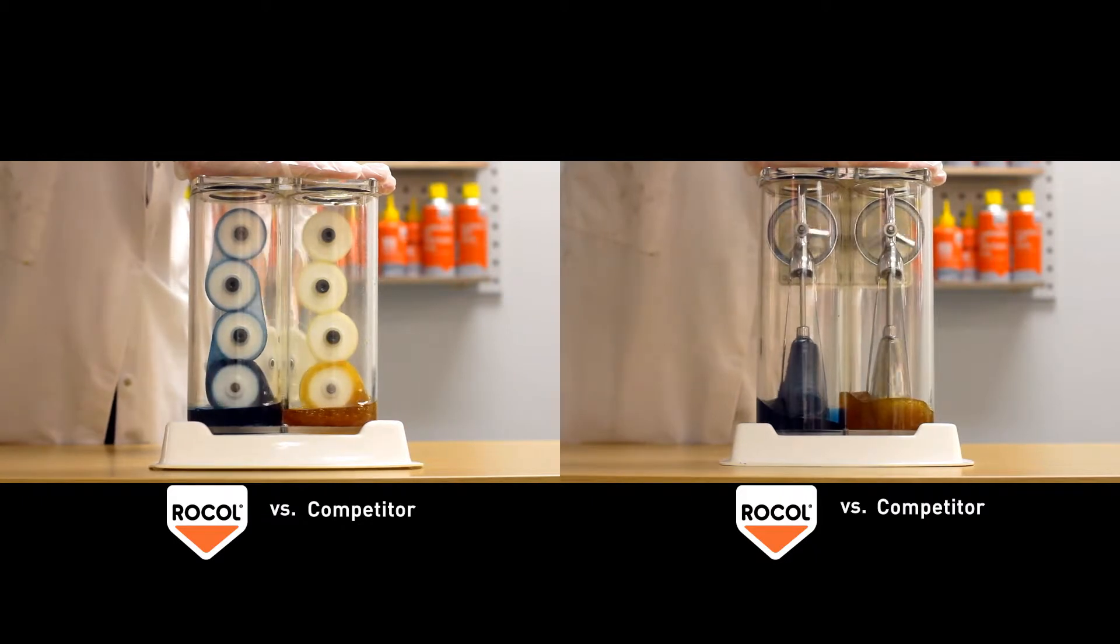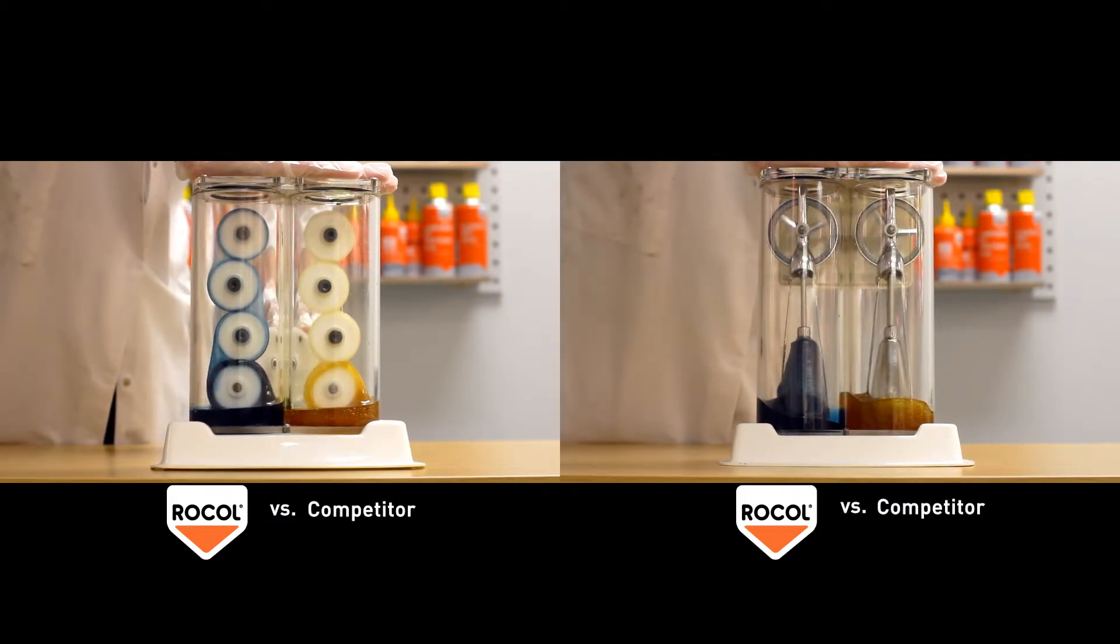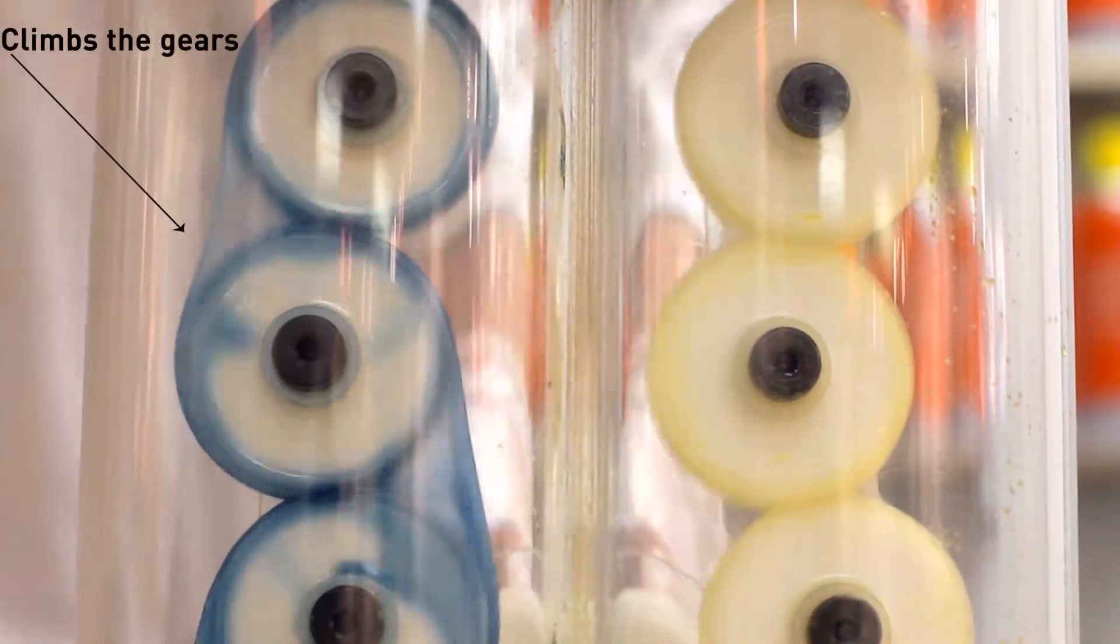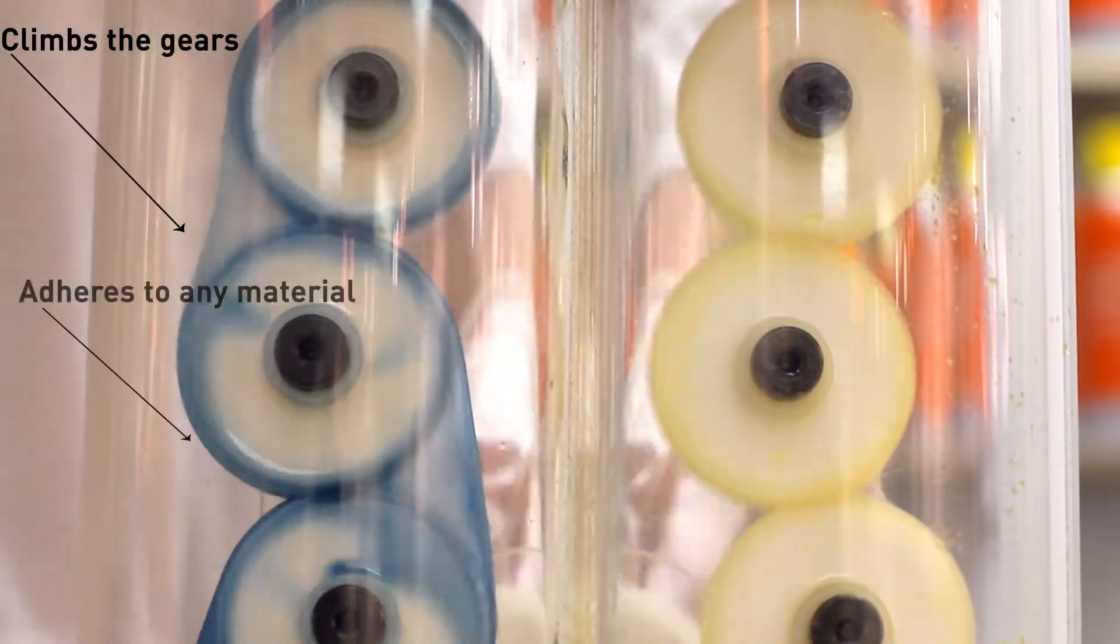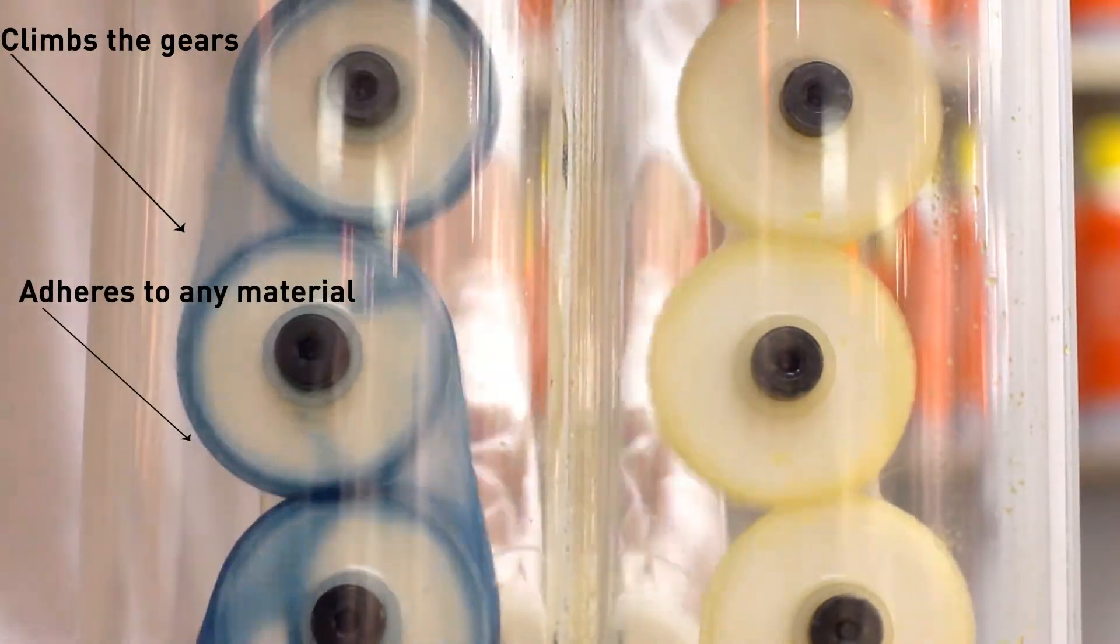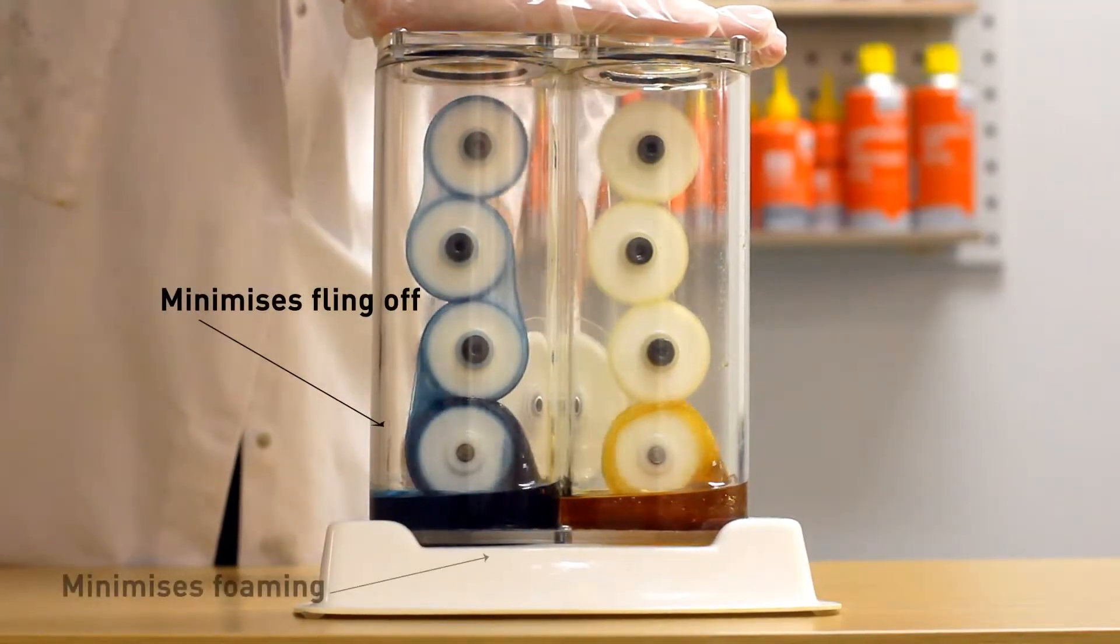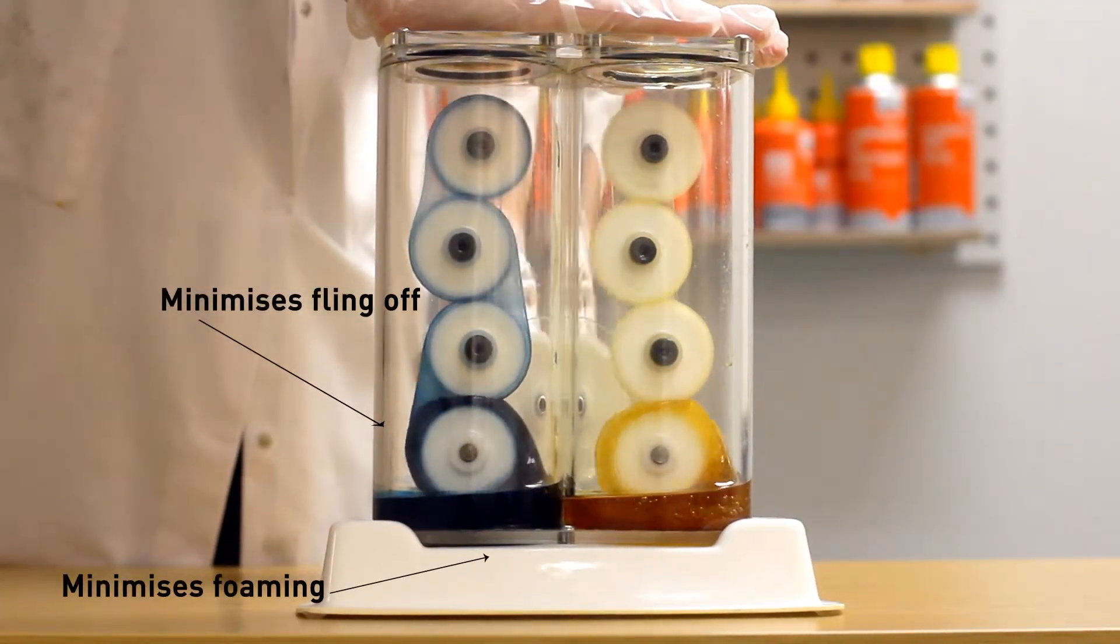Observe in both cases how the Roco Gear Oil with the Startup Protection System lubricates from startup, climbs the gears, adheres to any material, minimizes fling off, and minimizes foaming. Both oils shown have an ISO viscosity rating of 220.